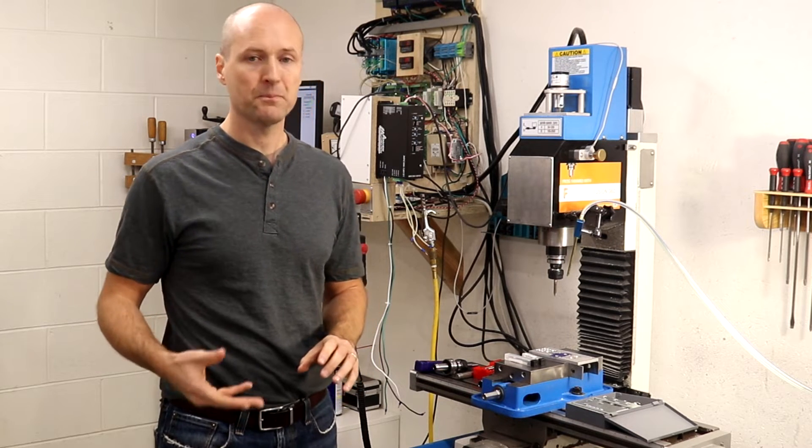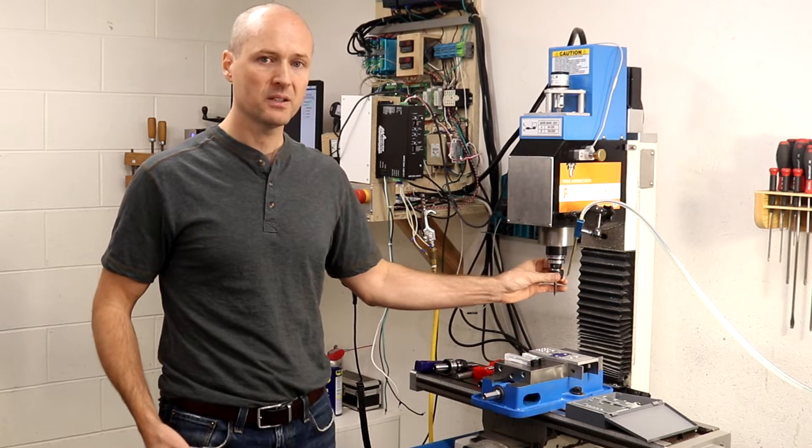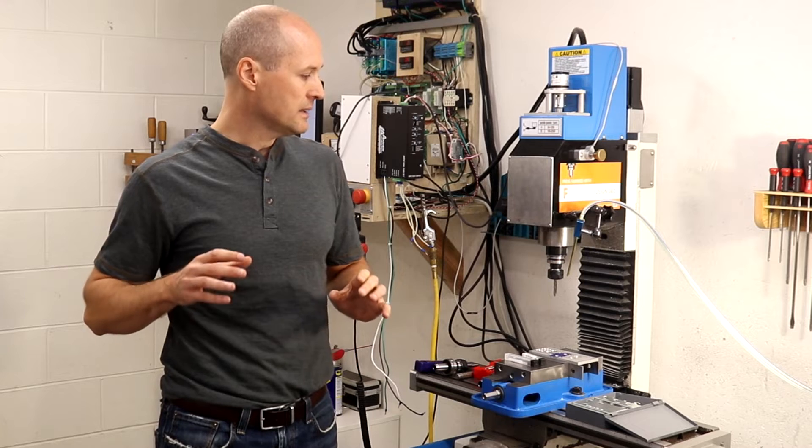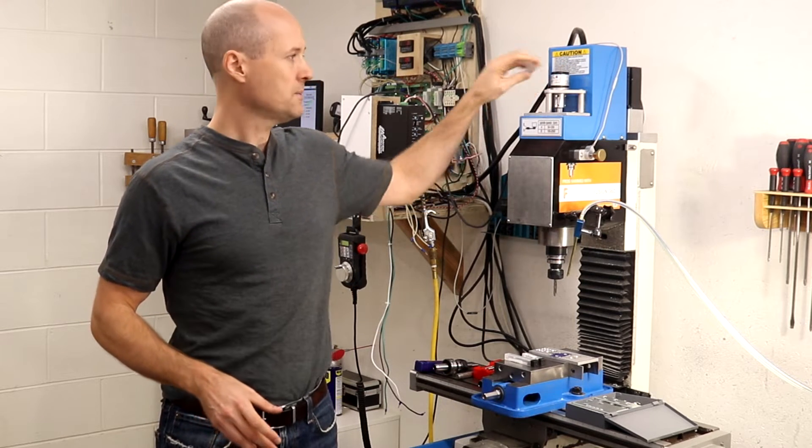To perform rigid tapping, there needs to be synchronization between the tool height and the angular position of the tool, and that's measured by a rotary encoder on the spindle. In this case, I attach the rotary encoder to the drawbar.